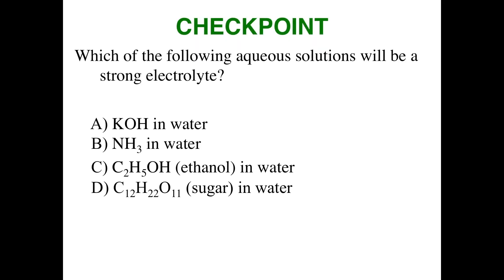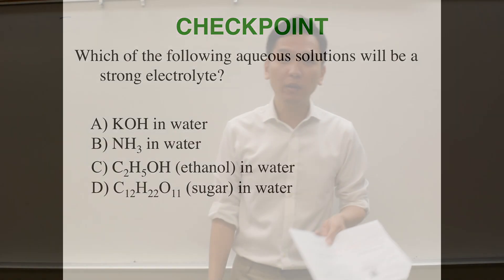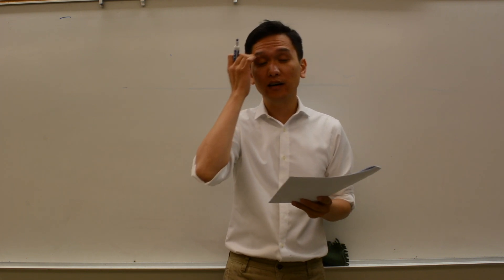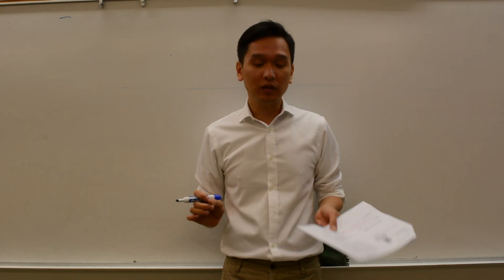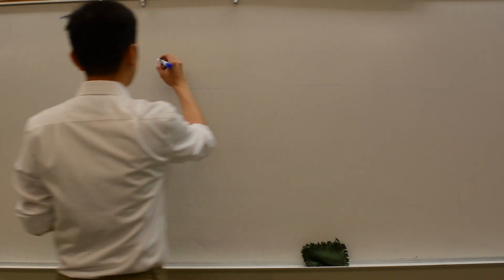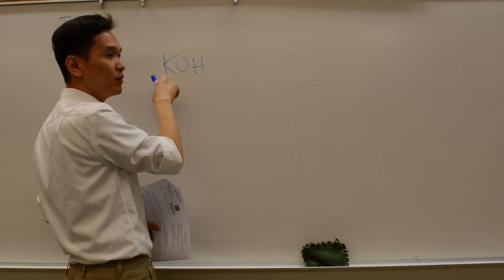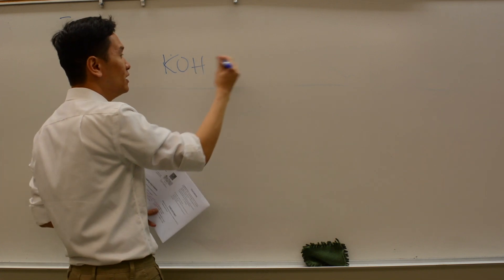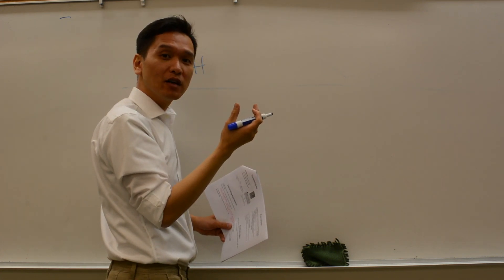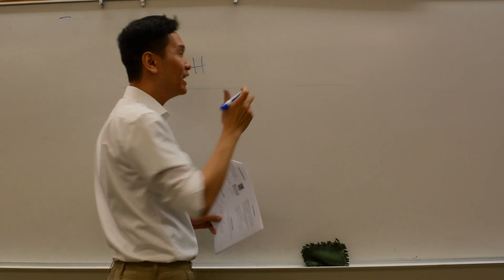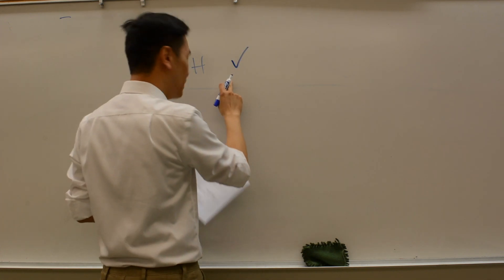Finally, checkpoint. Which of the following aqueous solutions will be a strong electrolyte: KOH in water, ammonia in water, ethanol in water, or sugar in water? Remember, to decide whether something is a strong electrolyte, it has to be able to dissolve completely. Let's go down the list. KOH, that's ionic, right? K cation, OH polyatomic anion. So will an ionic compound dissolve in water? For now we say yes, it will dissolve in water completely. So that might be our answer.